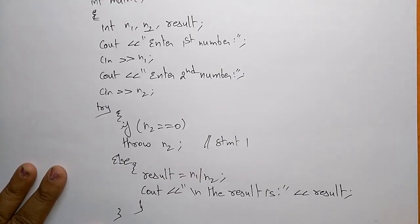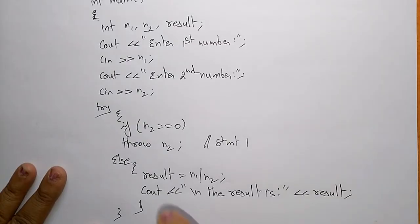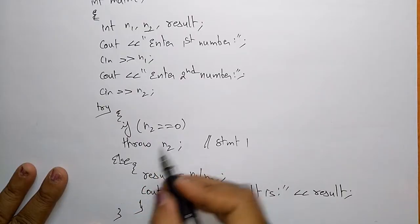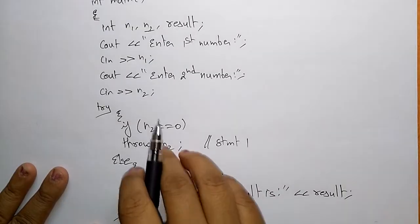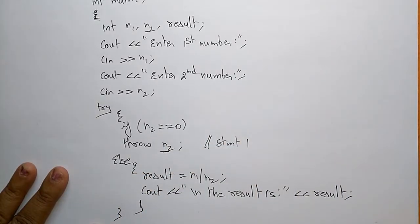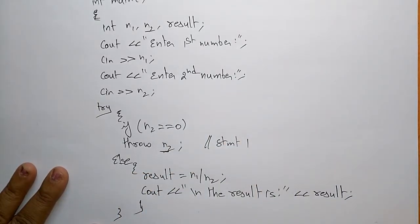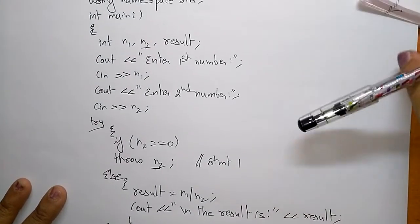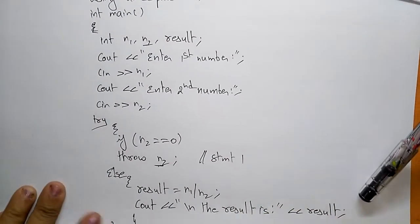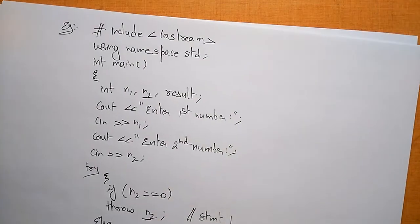Now I have written the try statement. I need to write the catch block. Whenever n2 is 0, an exception occurs — the try block throws that exception, the catch block catches it and handles it so the program continues normal flow.